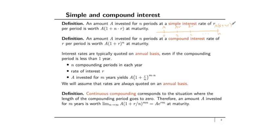An amount A invested for n periods at compound interest rate R per period is worth A times (1+R)^n at maturity. At time 0 you invest A. At time 1 you get A(1+R) back. You then reinvest the full amount — principal plus interest — for another period, getting A(1+R)^2, then A(1+R)^3, and so on. The key difference from simple interest is that every period you reinvest the principal and all accumulated interest.